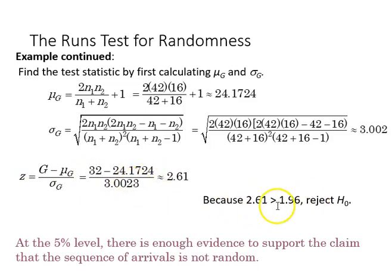At the 5% level, there is enough evidence to support the claim that the sequence of arrivals is not random.